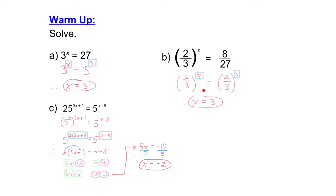So now we have powers with the same base. The base is 2 over 3. Since the powers are equal to each other, that means the exponents must be equal to each other. x equals 3.